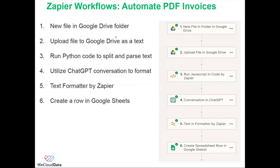This is the Zapier workflow that I designed for this automation process. This four-step process gets triggered every time a new PDF file is uploaded in a specific Google Drive folder. After that, the PDF file gets converted into text format in a different location in the Google Drive folder. I embedded Python code to simply split and parse the text data.